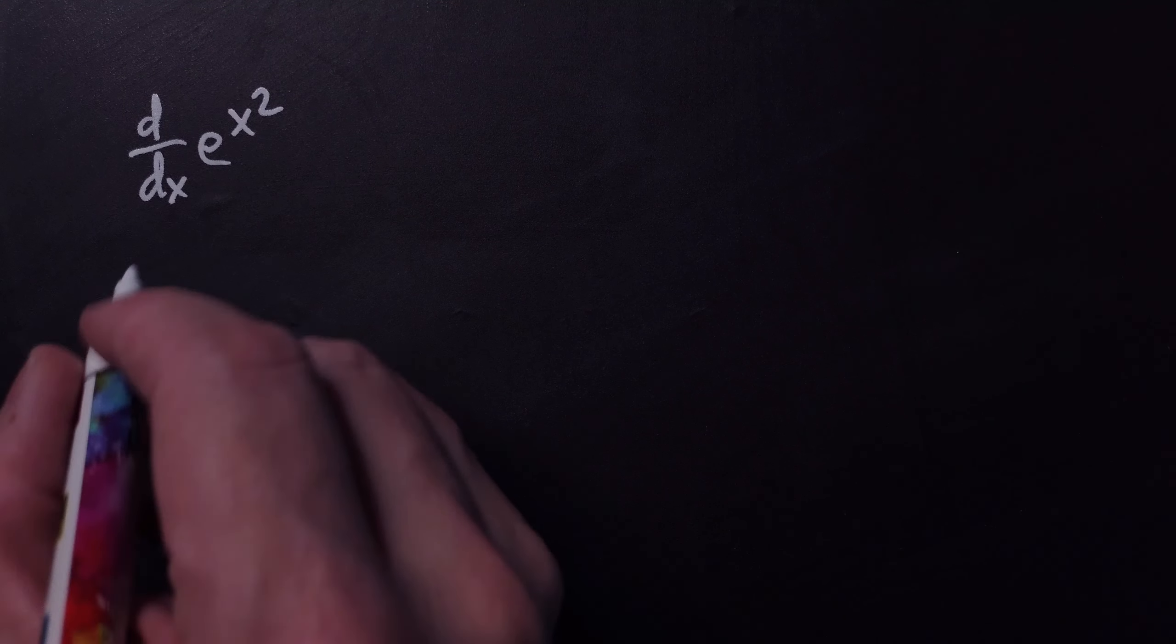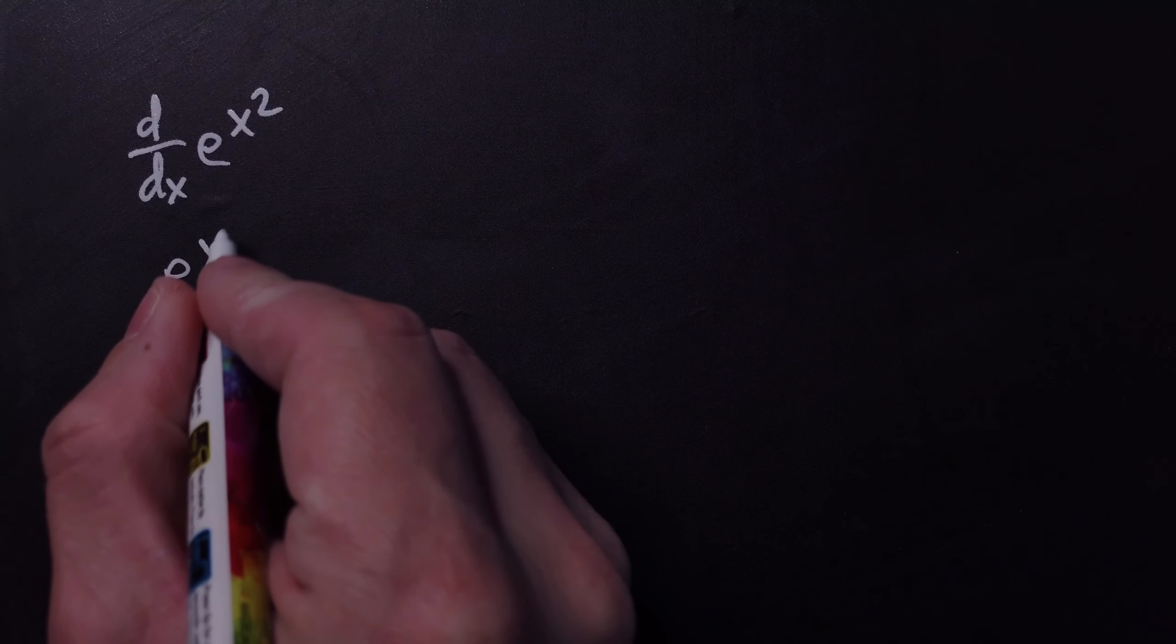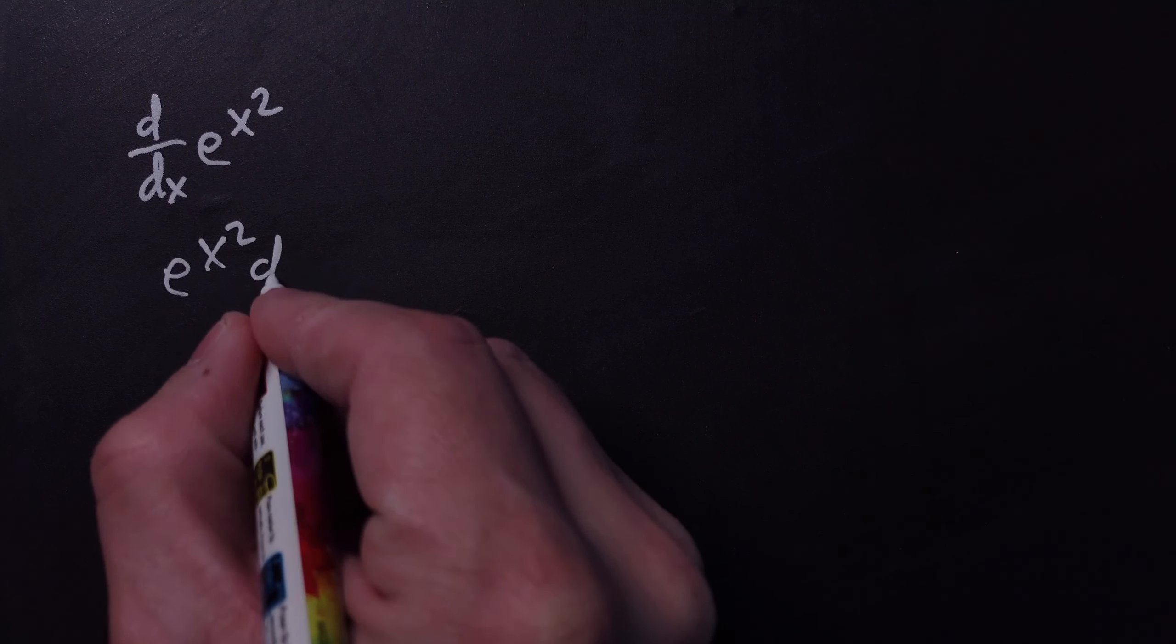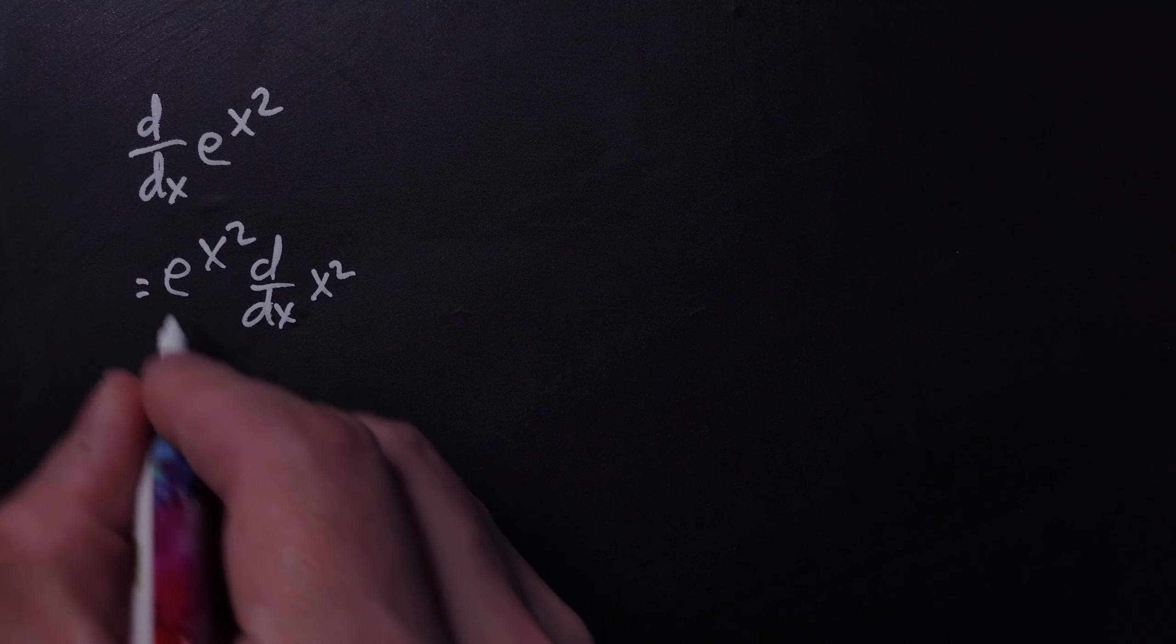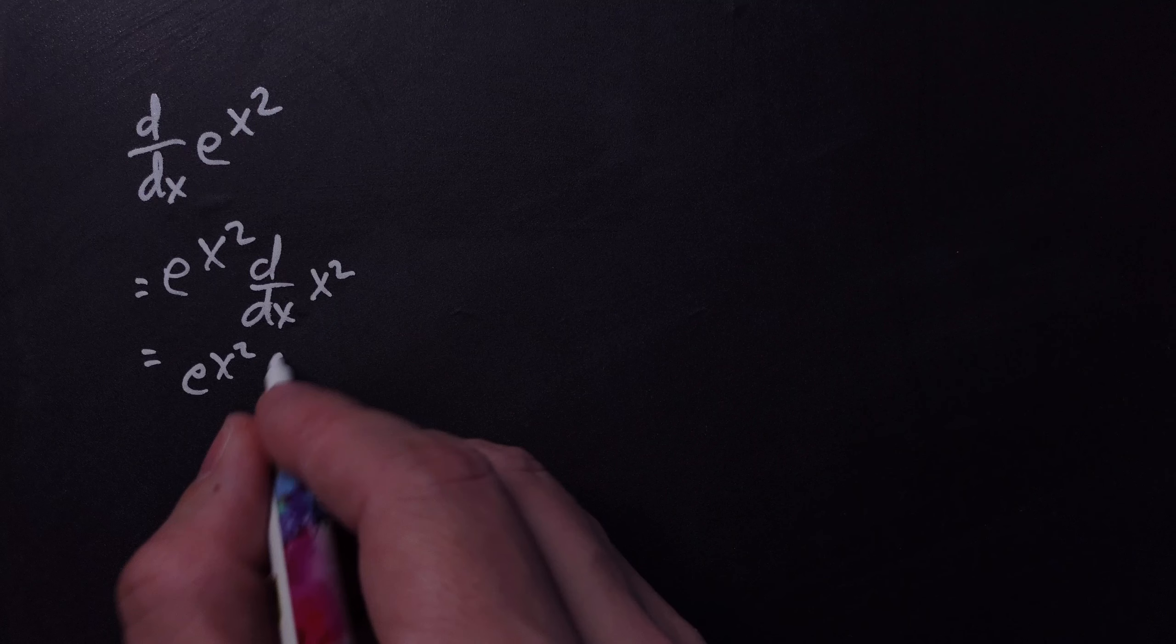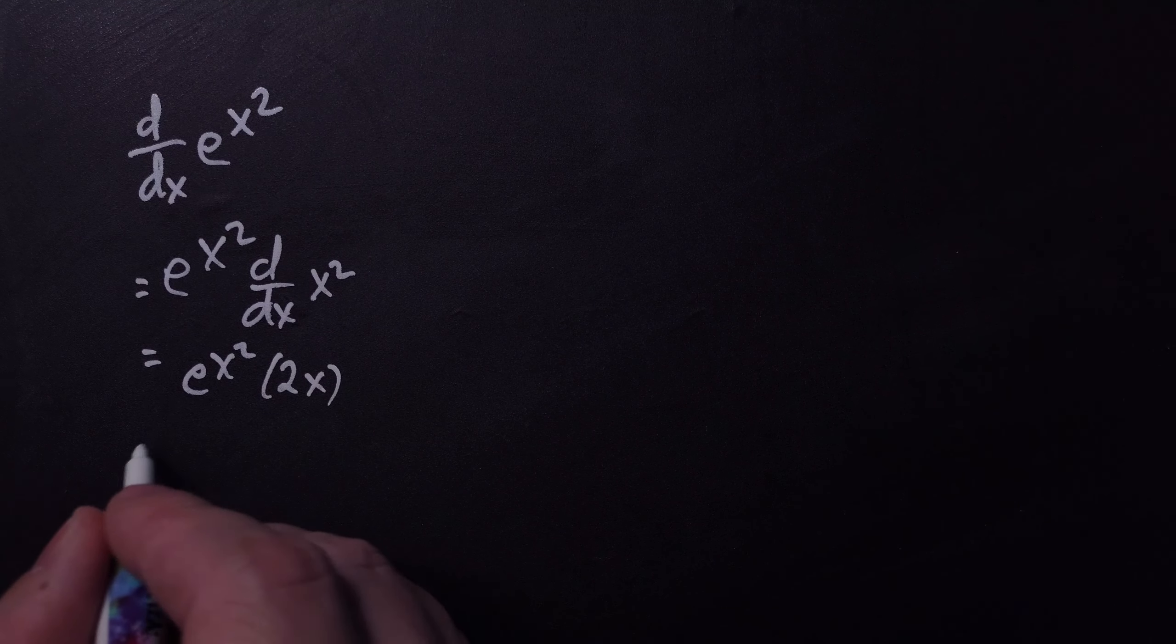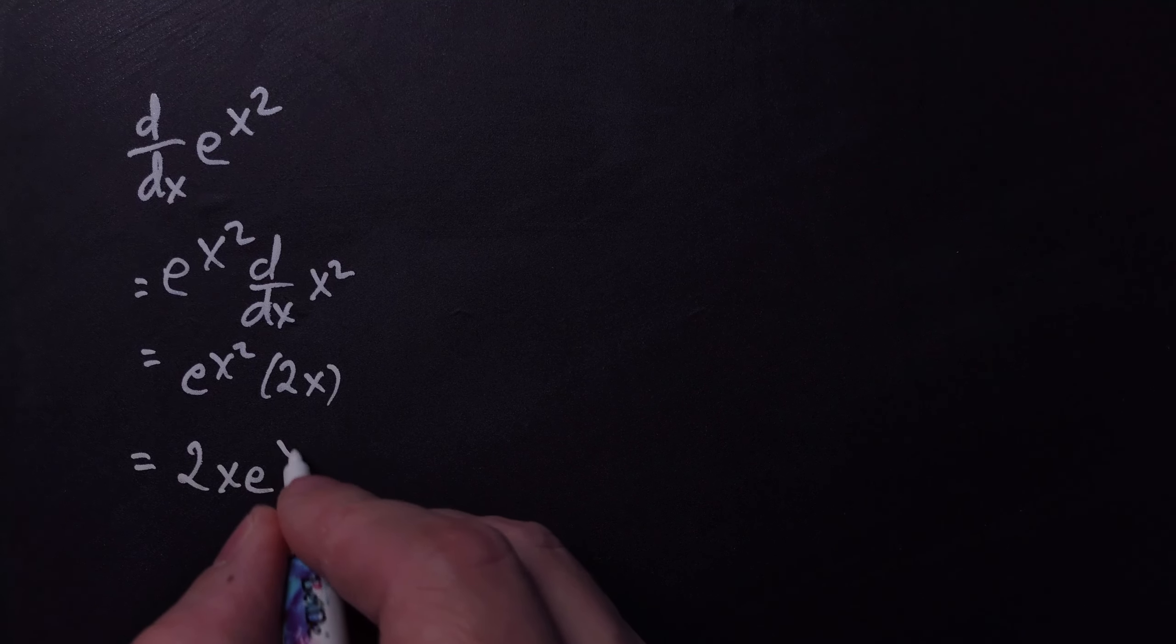The derivative of e to the x squared. So you're going to use the chain rule. That means you're going to do e to the x squared, you copy that, and then you multiply it by the derivative with respect to x of x squared. And then you continue, so with e to the x squared, the derivative of x squared is 2x. By convention, we place this out front, so we have 2x e to the x squared.